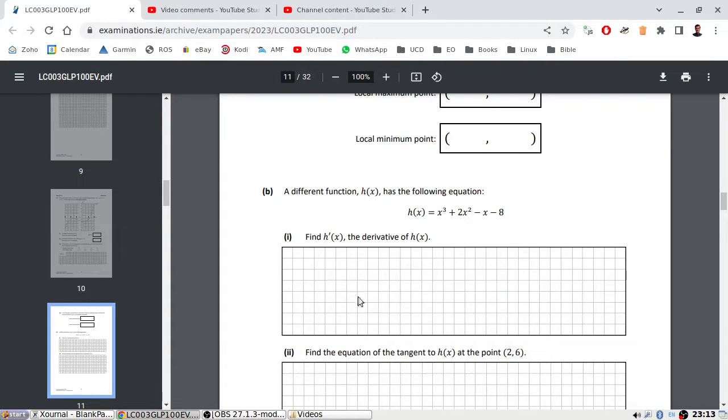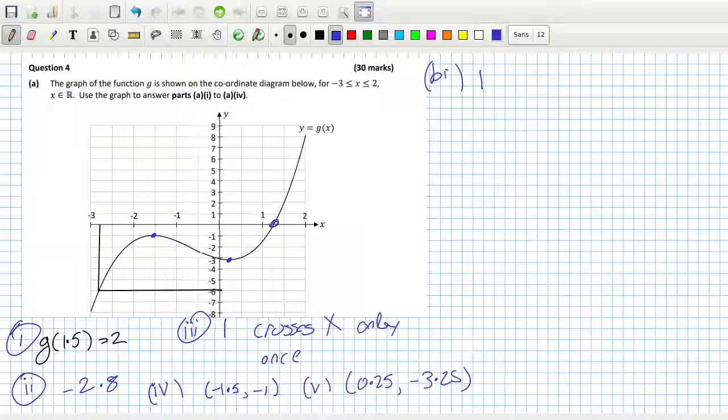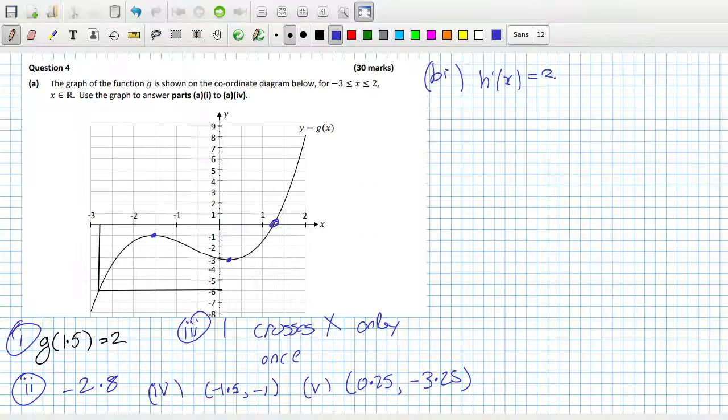A different function has the following equation. Find the derivative. Okay, so the derivative would be bring down the power and reduce the power by one: 3x squared plus 4x minus 1. Find the equation of the tangent at the point 2, 26.